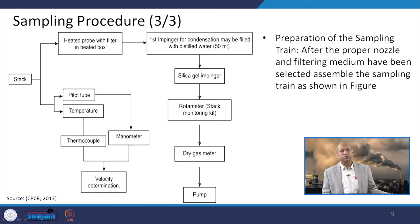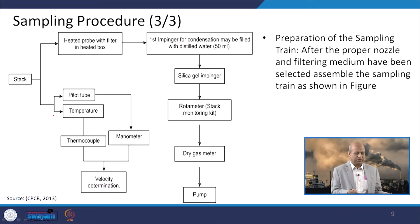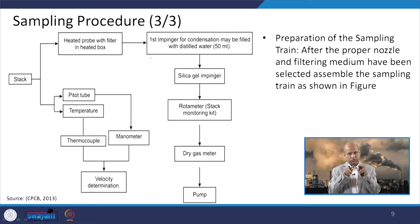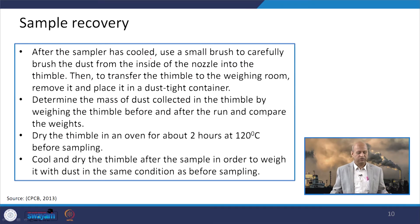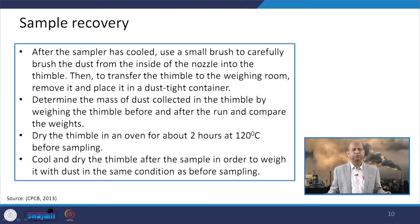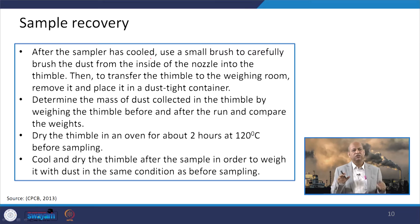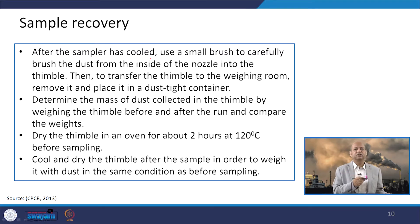Regarding the sampling procedure, there are two streams: one gives temperature and velocity-related values, and the other is where the particulate matter is collected. When sampling is complete, we collect the filter paper and must ensure there is no addition of particulate matter from outside. The mass of dust collected on the filter paper or thimble is weighed. It should be kept in an oven for about 2 hours at 120°C to remove any error due to moisture. The weight is taken before and after sampling, and the difference gives the concentration.